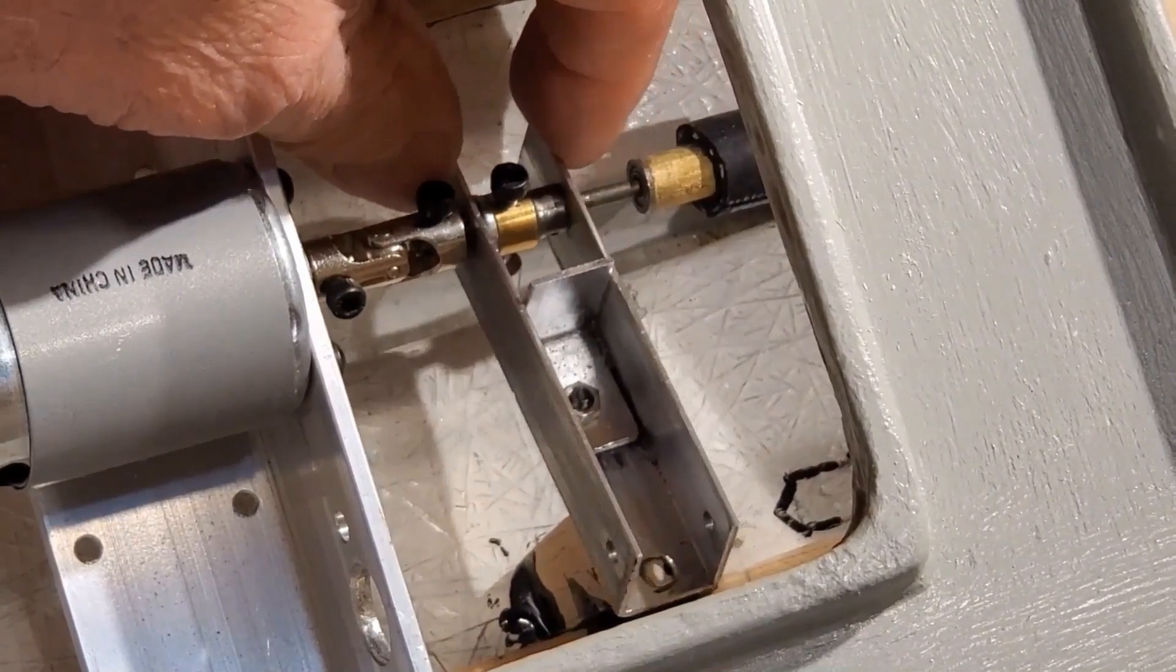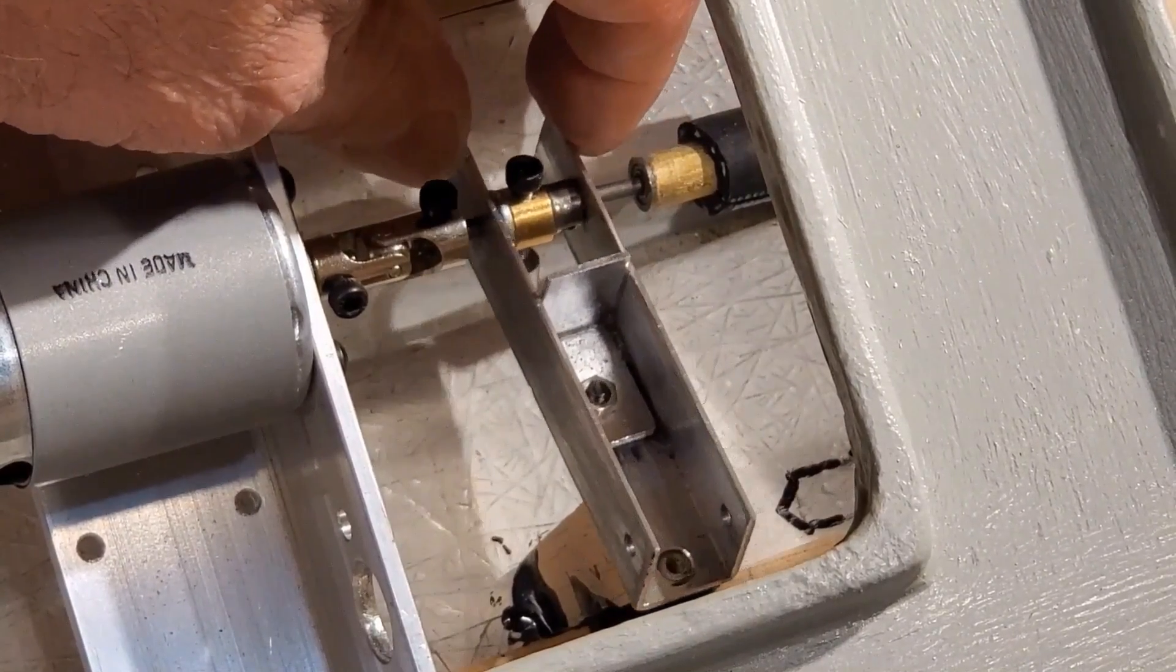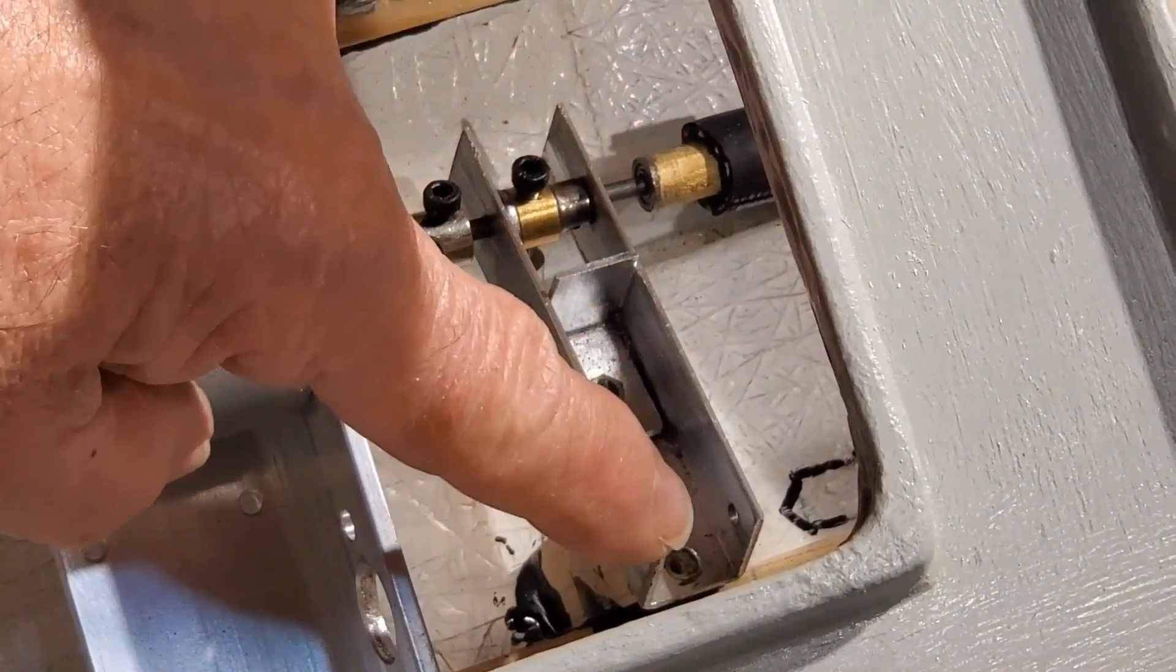And now the bottom arm of the knocker will slide like this on the shaft until I put a screw down here in the bottom.